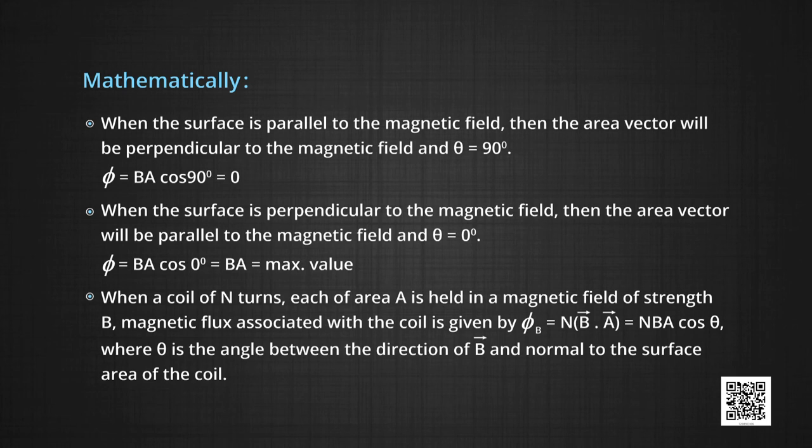When a coil of N turns, each of area A, is held in a magnetic field of strength B, the magnetic flux associated with the coil is given by Φ_B = N B⃗ · A⃗ = N B A cos θ, where θ is the angle between the direction of B and the normal to the surface area of the coil, which is the area vector.